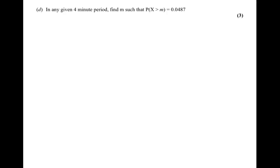The last part asks us to find m such that P(X > m) = 0.0487 in a four-minute period. First we update the distribution: in one minute we expect 2.5 cars, so in four minutes we expect 10 cars. Therefore X has the Poisson distribution with parameter 10.